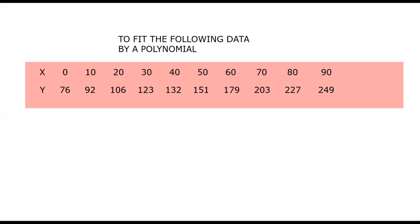I want to plot some data. I want to fit the following data by a polynomial. My data is: X is equal to 0, 10, 20, 30, 40, 50, 60, 70, 80, and 90. And the corresponding values of Y are 76, 92, 106, 123, 132, 151, 179, 203, 227, 249. Please take this down in your copy so that it would be helpful when we type the program.